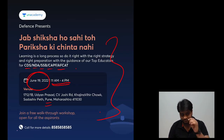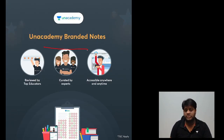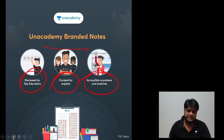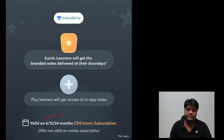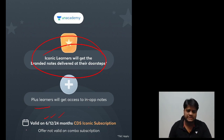I will put the invite link in the description. The next thing is our branded notes. Unacademy has started to give branded notes, which are curated by experts and reviewed by top educators. Students who get an iconic subscription — 6 months, 12 months, or 24 months — they will receive notes, and plus learners will be able to access them.